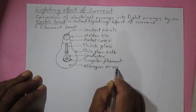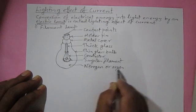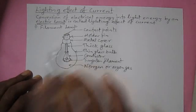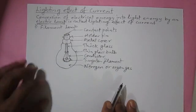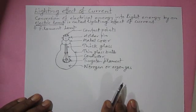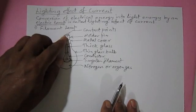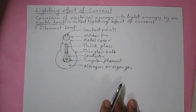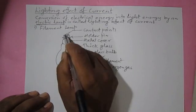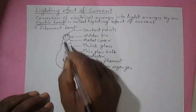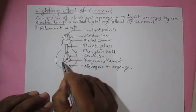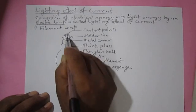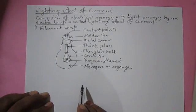The bulb is filled with nitrogen or argon gas. Now, from these two contact points, one point is connected to the live line and the other is connected to the neutral line. When we switch on the circuit, current comes from the live line, passes through the tungsten filament, and the circuit is completed by the other contact point.